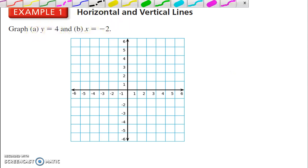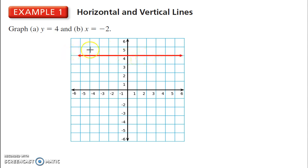Graph y equals 4. So y equals 4. Here's the y-axis. I go up to 4. Y is always 4. So, over here, y is 4. Over there, y is 4. So, y equals 4 is a horizontal line.